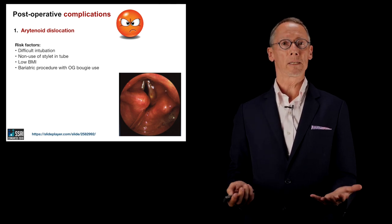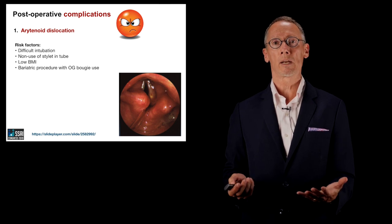Low BMI is also a risk factor for arytenoid dislocation — one article speculated this may relate to the rheumatoid arthritis population, who may be at risk of cricoarytenoid arthritis, predisposing them to dislocation. Bariatric procedures are also a risk factor, likely due to use of a large bougie passed down the esophagus.